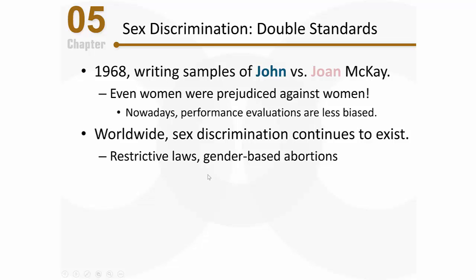Sexual discrimination still exists. Think about gender-based abortions — some families want a boy so badly to carry on the family name, particularly in countries where they're limited in the number of babies they can have, that they'll find out the gender of the baby and abort if it's a girl. These are extreme examples, but it's important to remind ourselves that this type of discrimination still exists.